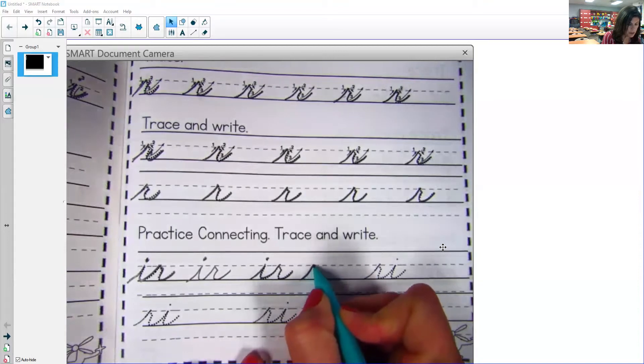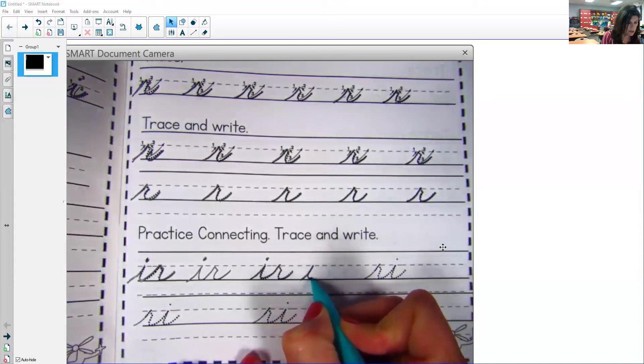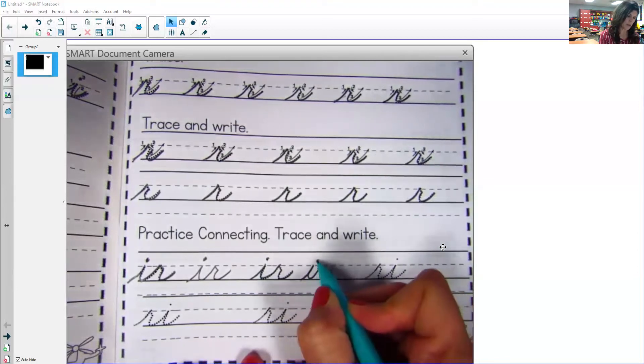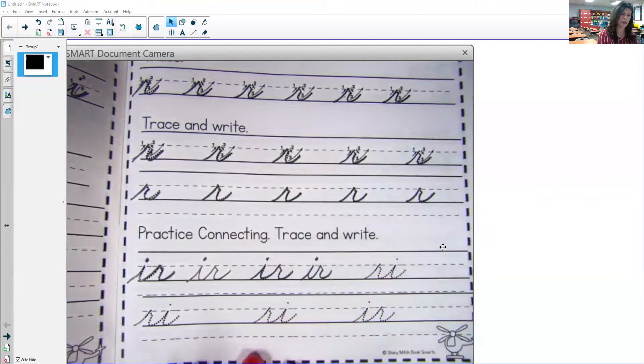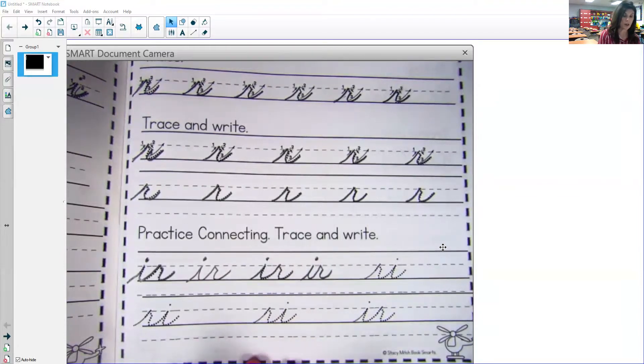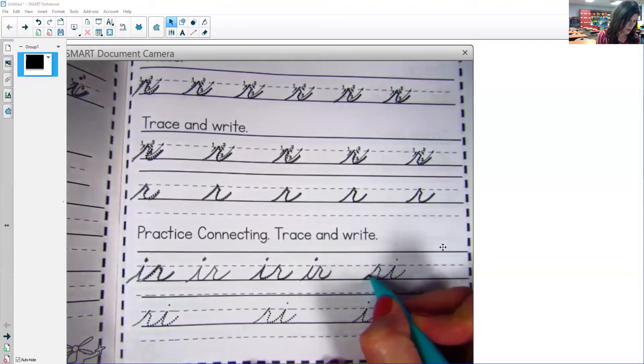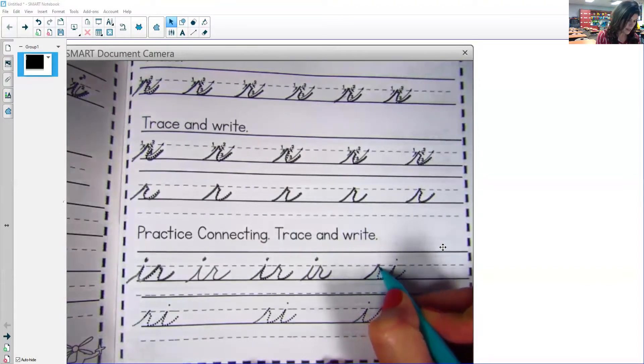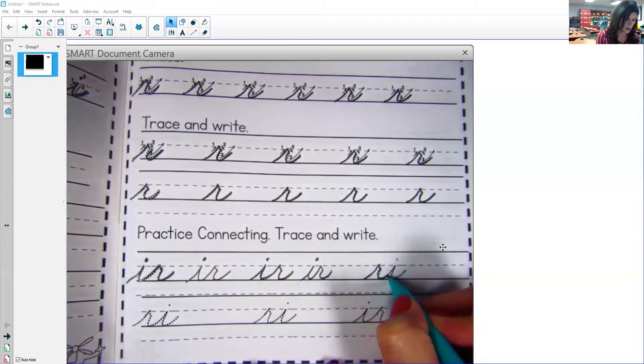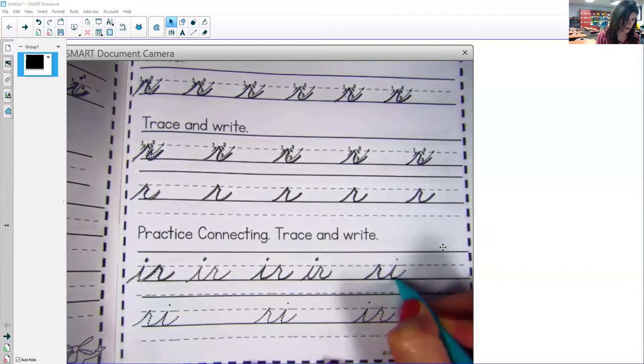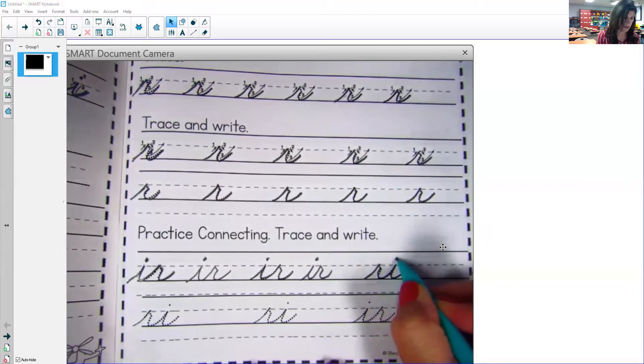I, go up to the mid line, come down, touch the baseline, go up again, slant, come down, and scoop up, dot your I. Now they want us to try R I, so be careful. We're going to start with the letter R first. Up, slant, down, go into your I, touch the middle line, come down, scoop up, and then dot your I.